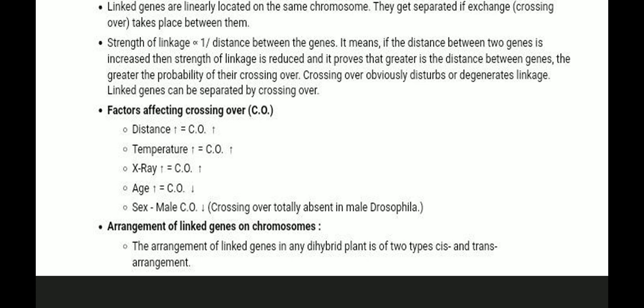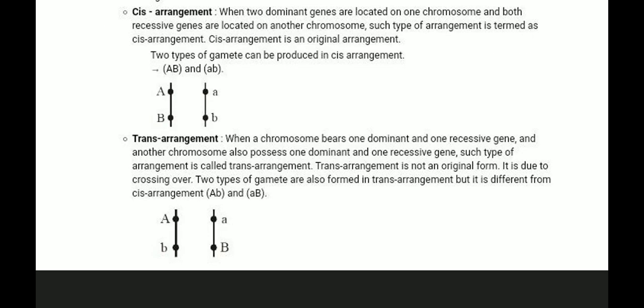The arrangement of linked genes in any dihybrid plant is of two types. In one type, Capital A and Capital B are dominant on one chromosome, and the other chromosome carries the small a and small b recessive alleles. In the other arrangement, dominant and recessive genes alternate — this is the trans arrangement.